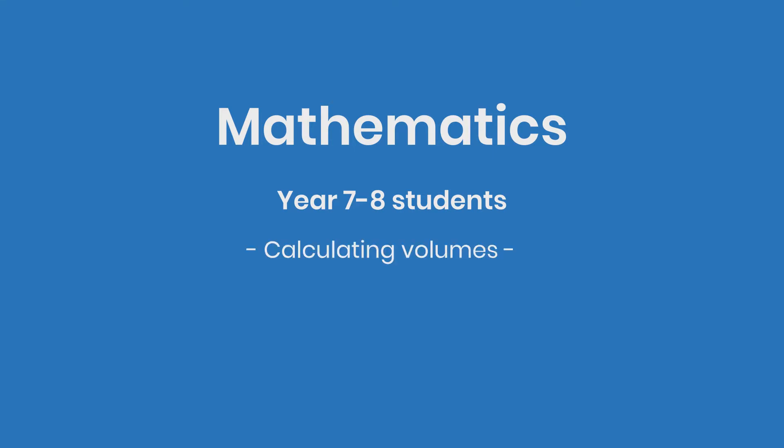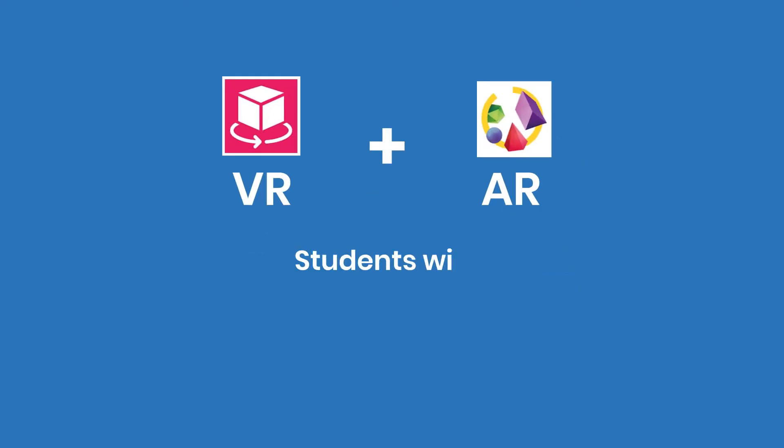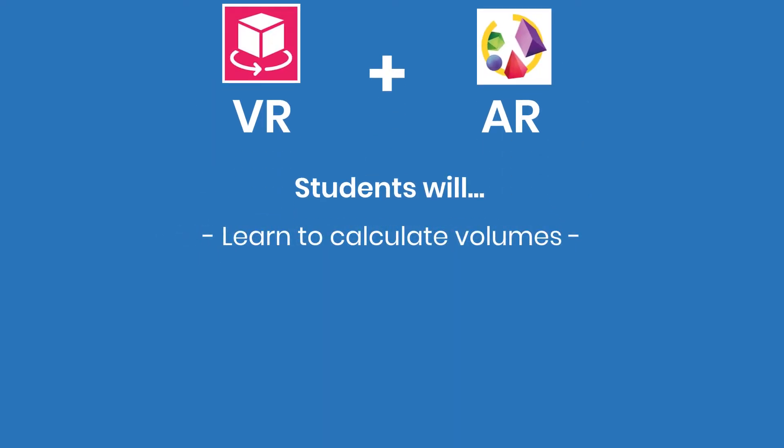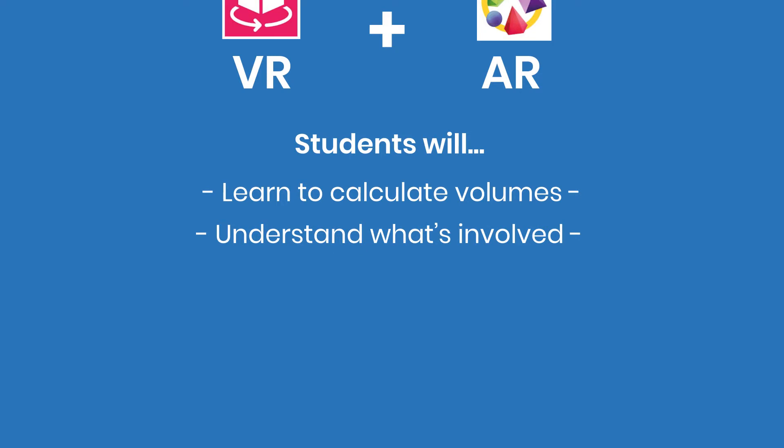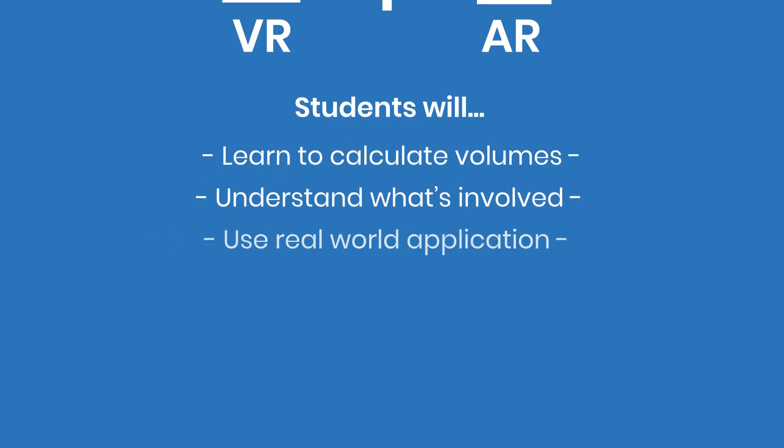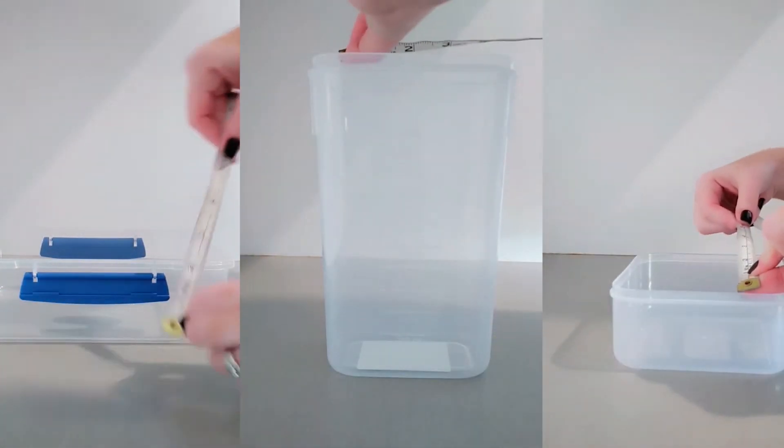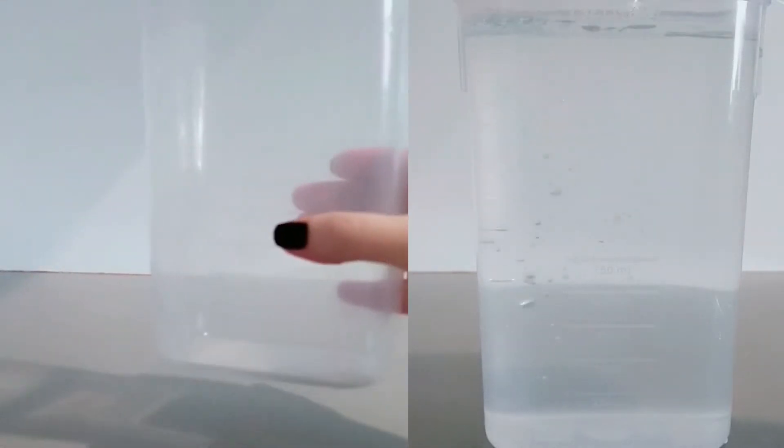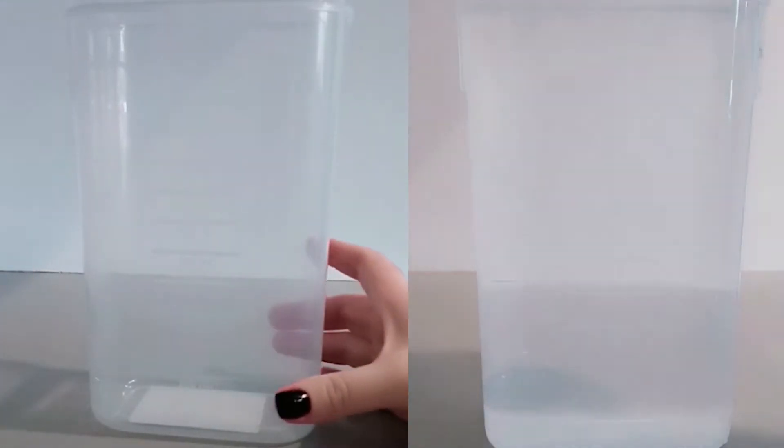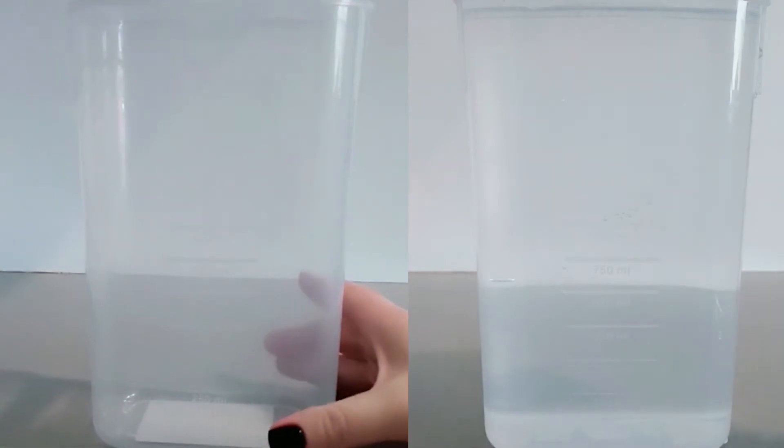This lesson plan is on mathematics and it's aimed at year 7-8 students, looking at calculating volumes. We're going to use some virtual reality and augmented reality apps for the students to independently learn how to calculate those volumes, come to an intuitive understanding of what's involved in that, and then they're going to find some containers around their house, measure them for dimensions, do their calculations on what they think the volume is going to be, and then actually physically fill them with water and measure that water and see what the differences are between the actual and the calculated measurements.